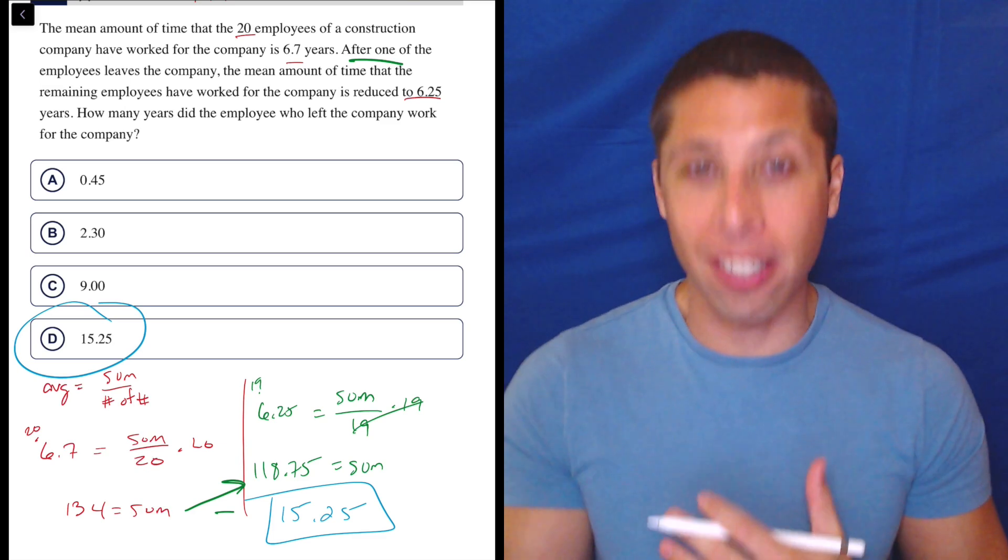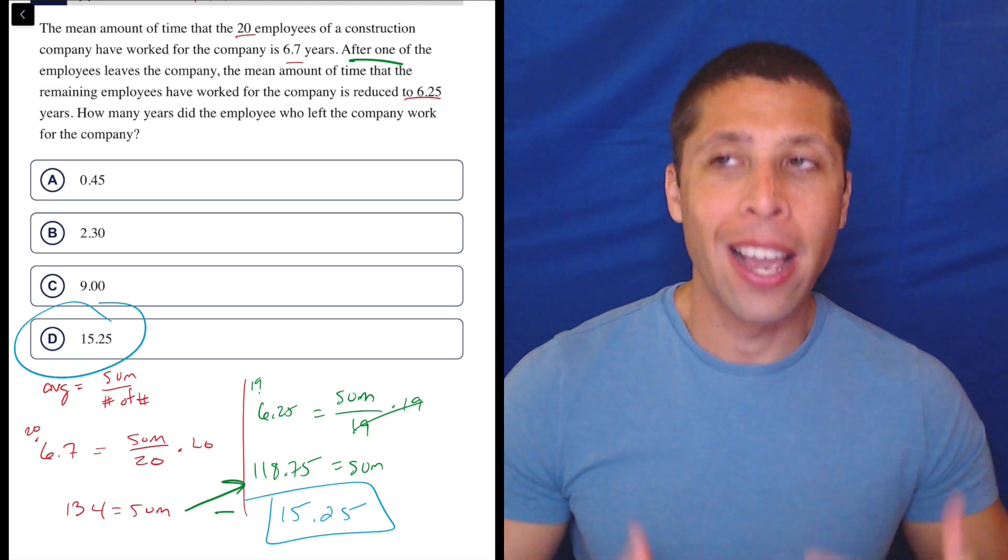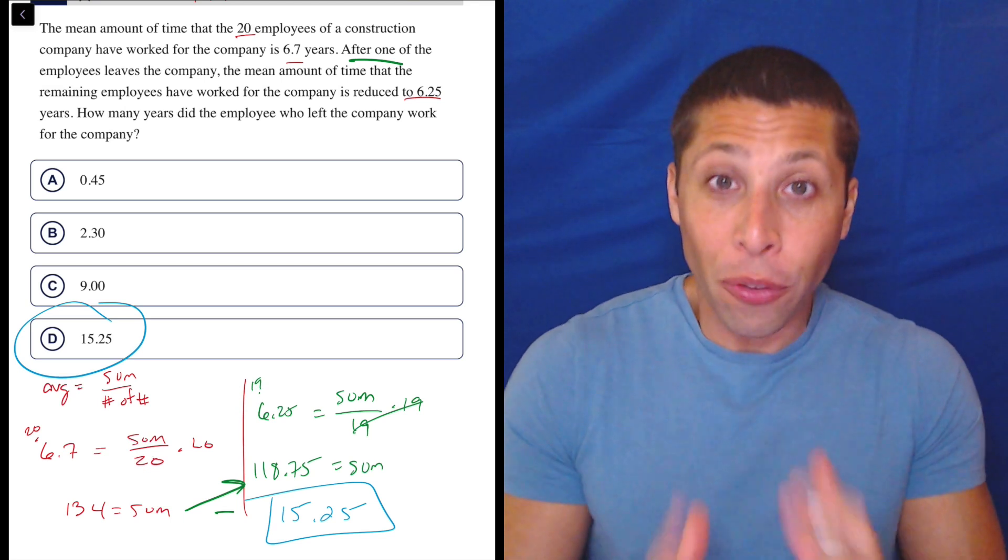This one is kind of reversing it. It's giving us the average. It's changing the set in some way. We have to use the formula twice, but it's still the formula.